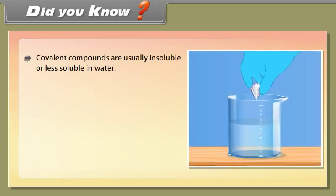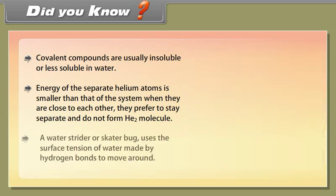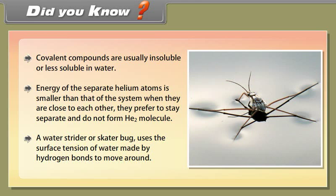Did you know? Covalent compounds are usually insoluble or less soluble in water. The energy of separate helium atoms is smaller than that of the system when they are close together, so they prefer to stay separate and do not form an He2 molecule. A water strider or skater bug uses the surface tension of water — created by hydrogen bonds — to move around.